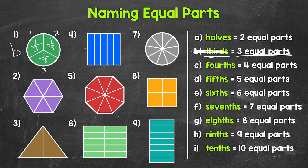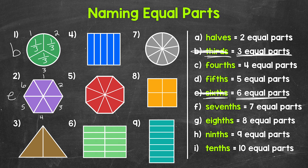Let's move on to number two. This whole has been divided into one, two, three, four, five, six equal parts. So six equal parts — we call six equal parts sixths. So let's put an E next to number two and cross off sixths. Now each one of those equal parts is one sixth of the whole.